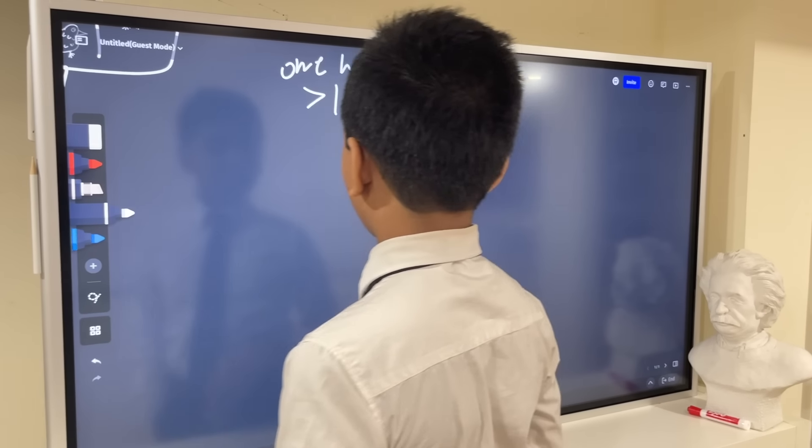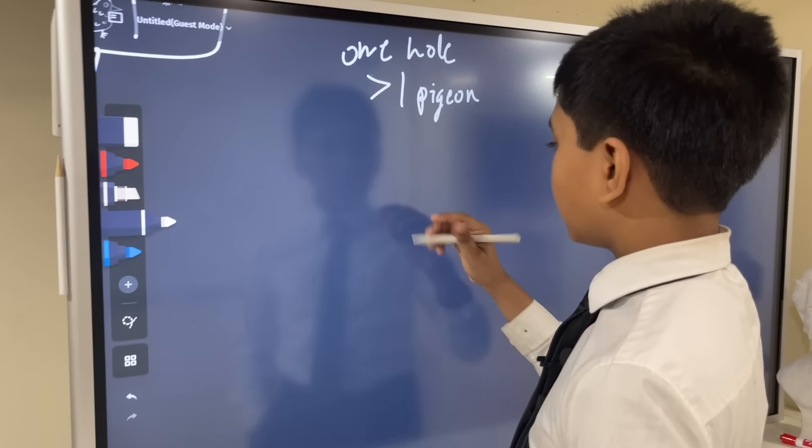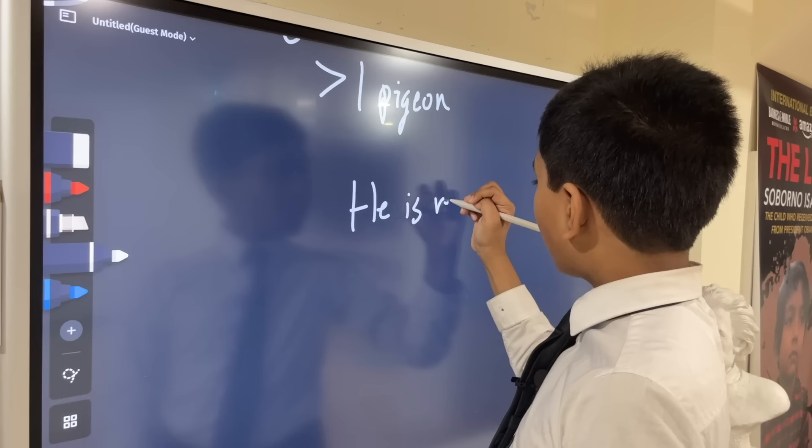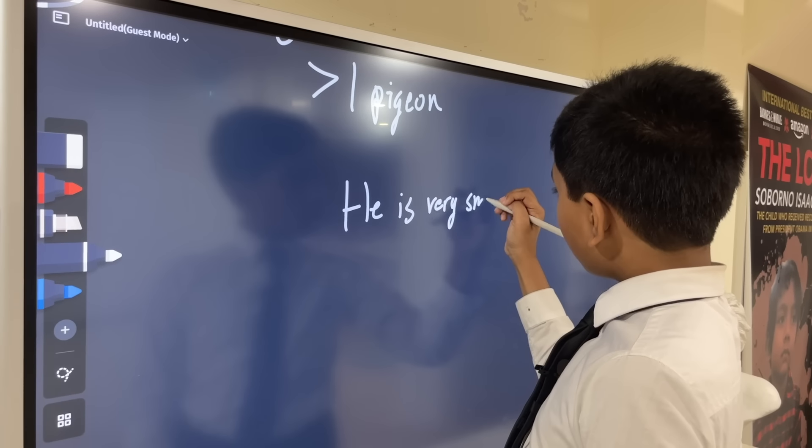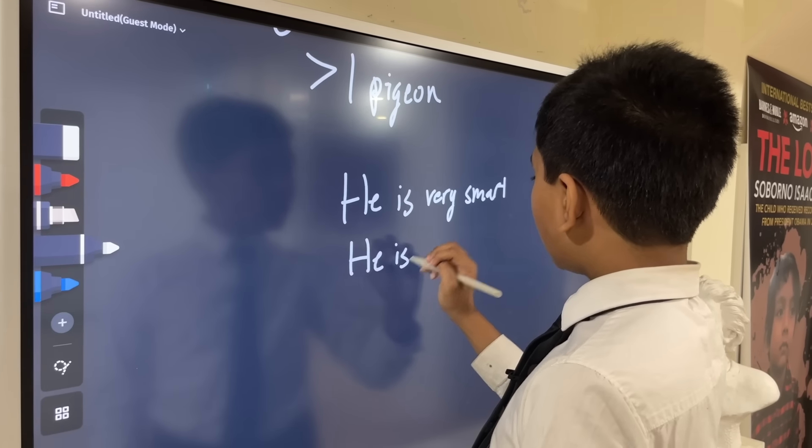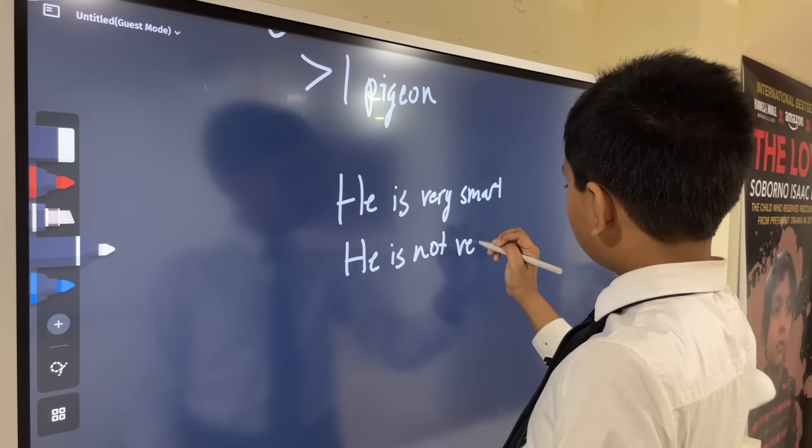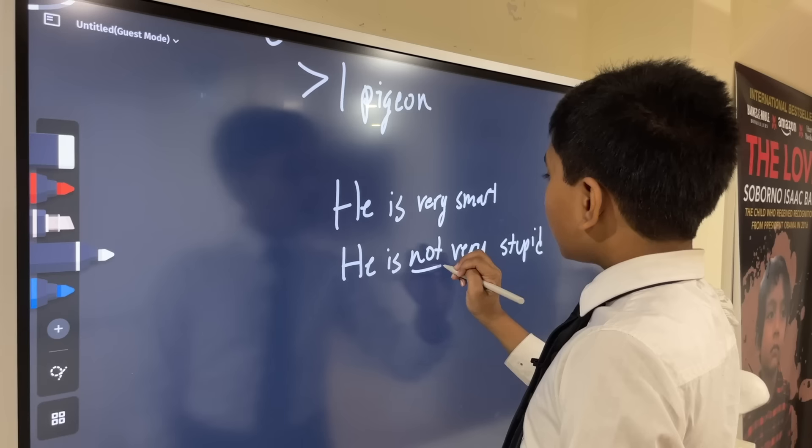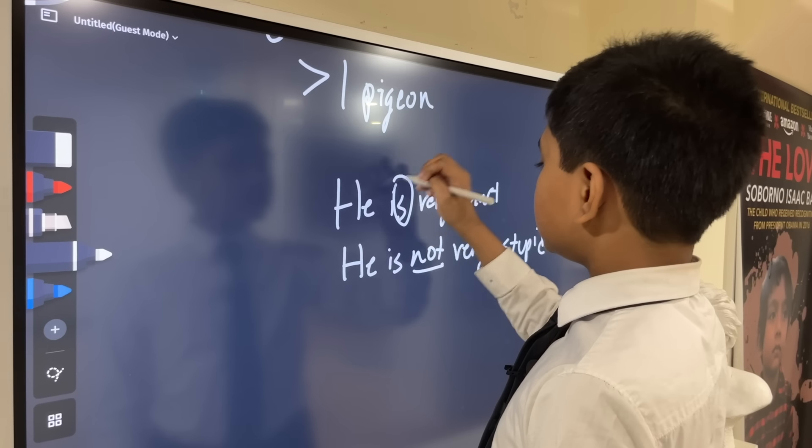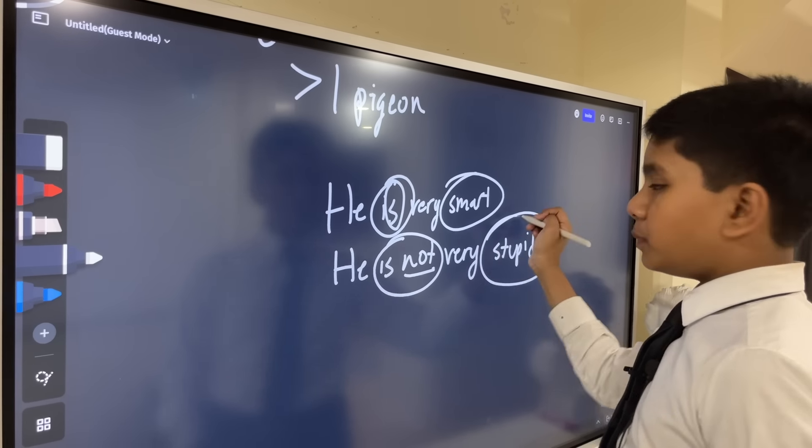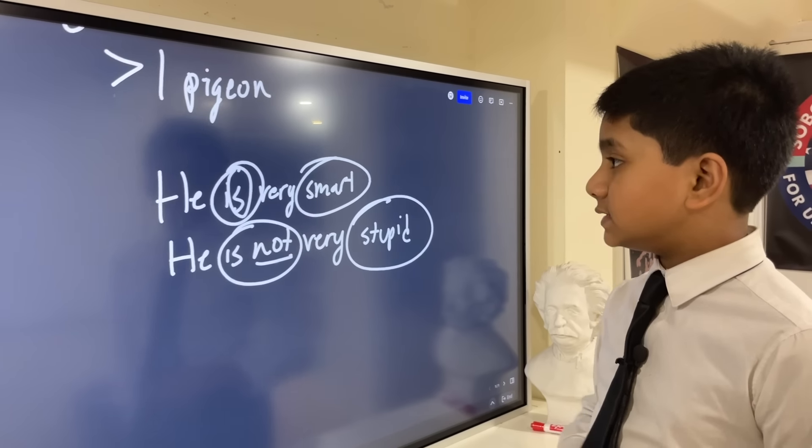I'll give an example, because I know that it sounds confusing. If you wanted to say, he is very smart, the contrapositive would be he is not very stupid. Not is the opposite of is, or is not is the opposite of is, and smart is the opposite of stupid, but these two still say the same thing. That's what a contrapositive is.